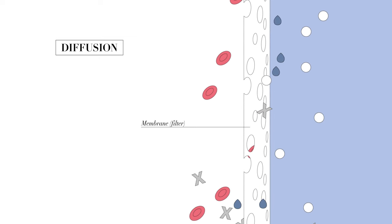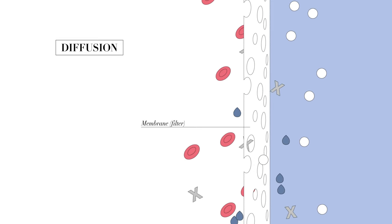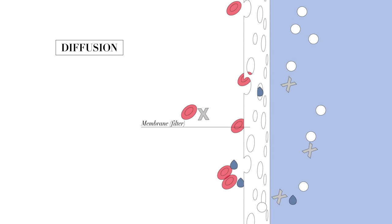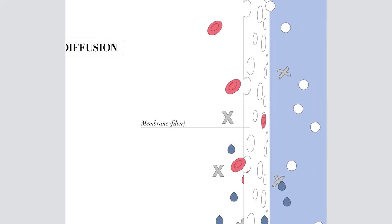At the same time, excess fluid is removed from the patient's body. The transfer of metabolic toxins through the membrane into the dialysate is based in part on the principle of diffusion.